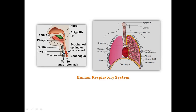The pharynx opens into the trachea through a small opening called the glottis. When food is being swallowed, the glottis gets covered by a flap-like structure called the epiglottis. The epiglottis is a thin, elastic, cartilaginous flap. It prevents food from entering the larynx, avoiding choking.